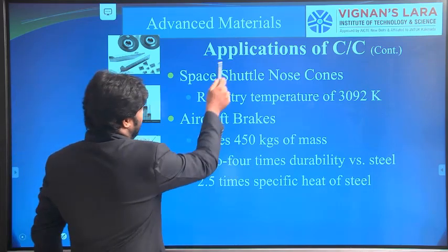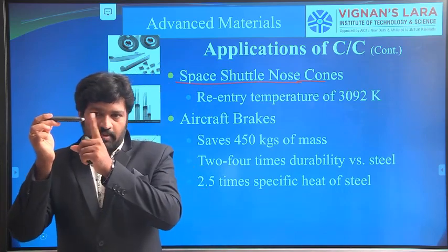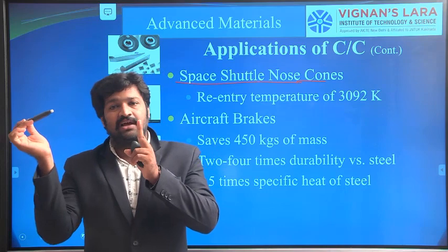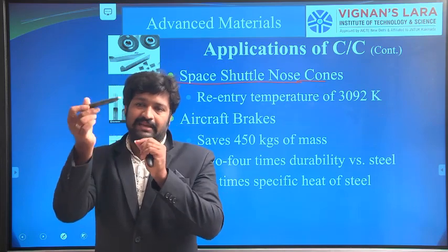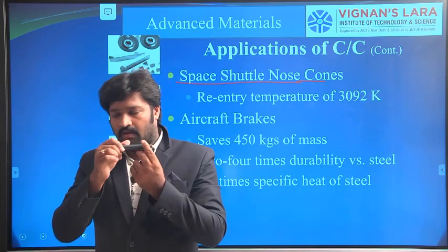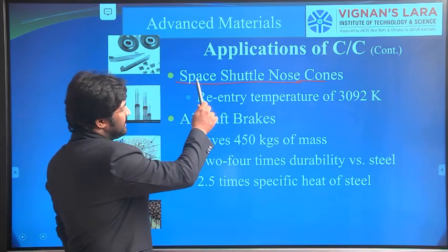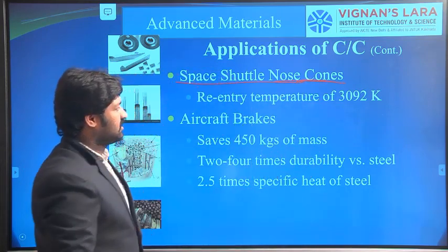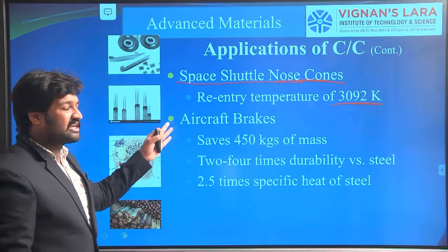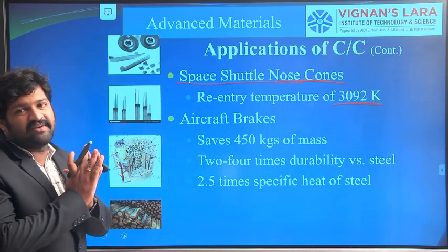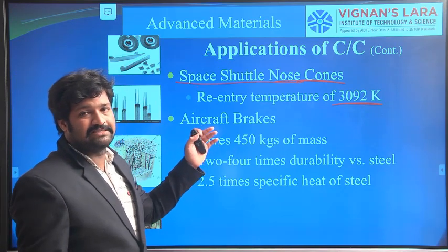These composites are mostly seen in space shuttle nose cones. The nose cone is the starting point of the rocket, and it is exposed to very high temperatures due to the high velocity of the rocket interacting with the environment — temperatures can reach around 3000 Kelvin. To withstand this, nose cones are manufactured with carbon composites. They are also used in aircraft brakes, where friction generates high heat, and the carbon components can withstand those temperatures.